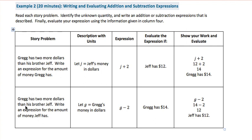In another situation, Greg has two more than his brother Jeff, but now we want to write an expression for the amount of money Jeff has. So if G represents how much Greg has, Jeff has two dollars less than that: G minus 2. Then if we know Greg has 14 dollars, we would do 14 minus 2. These two expressions differ based on what you're looking for.